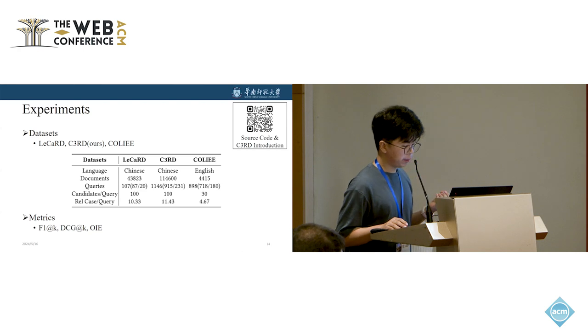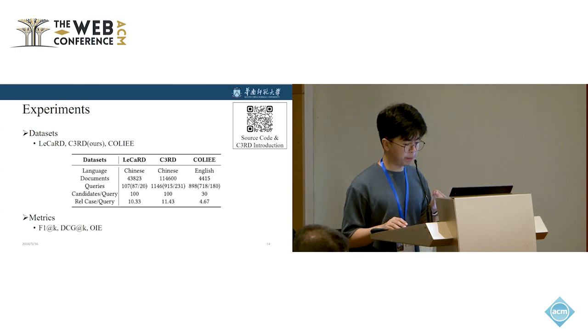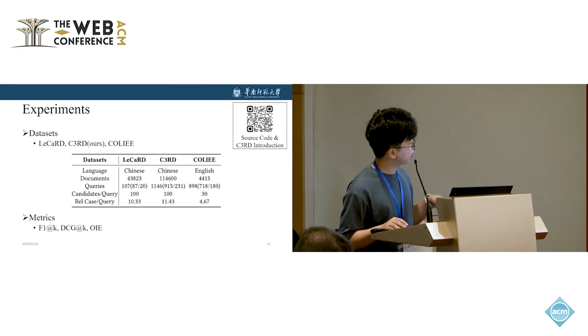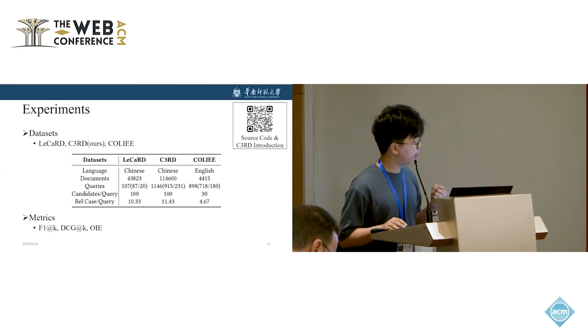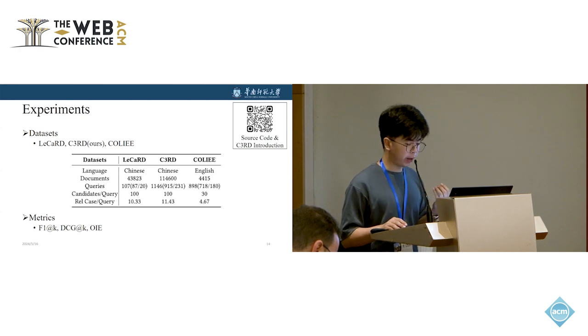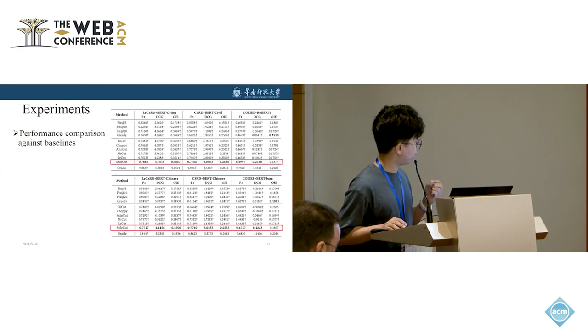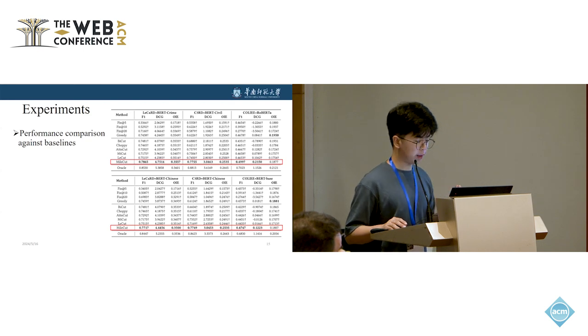We evaluate MileCut on three legal retrieval datasets: LeCaRD, C3RD, and COLIEE. Especially, C3RD is built by us. For more detail, you can see our GitHub page. We adopt different encoder models, including the legal domain retrieval encoder and native encoder. As for evaluation metrics, F1 at K, DCG at K, and OIE are employed.